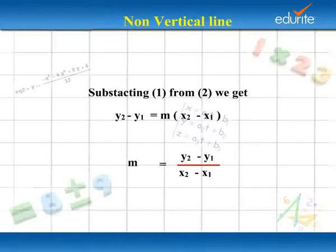Subtracting equation 1 from equation 2, we get y₂ - y₁ = m(x₂ - x₁). That is, m = (y₂ - y₁)/(x₂ - x₁).